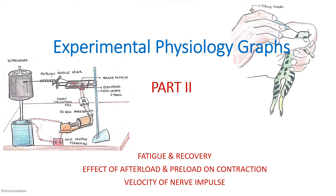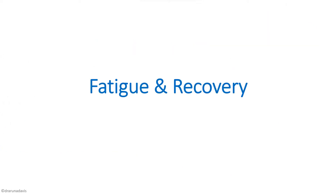In this video we're going to discuss the experimental physiology graphs, especially that of fatigue and recovery, the effect of temperature, the effect of load, and also the velocity of nerve impulse. The first experiment is fatigue and recovery. The aim of this experiment is to find out whether the nerve muscle preparation is fatigable, to know the seat of fatigability in isolated nerve muscle preparation, and also to know whether it is reversible.